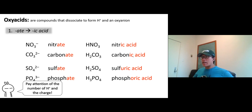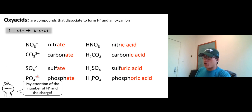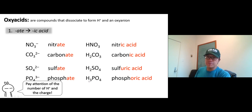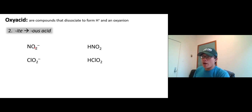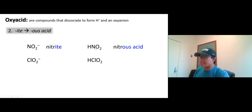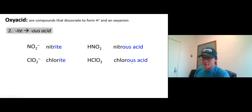Pay attention to the number of protons that can be added into the oxyanion: charge of -1, add one proton; -2, add up to two; -3, add up to three. Now, for -ate to -ic acid, we also have the -ite family. When anions like nitrite, chloride, or bromide become an acid, we use the -ous ending. For example, nitrite becomes nitrous acid.